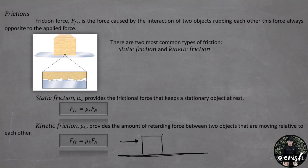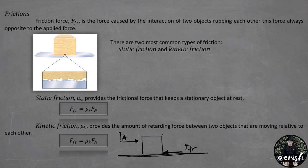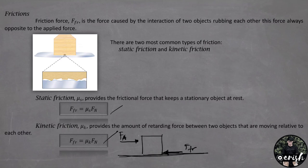For example, if we have an object on a surface and we apply a force F sub A, a retarding frictional force acts on it by Newton's third law of motion, opposing the applied force. The frictional force is found at the surface. There are three rules of thumb for kinetic friction: number one, it is proportional to the magnitude of the normal force; number two, it is independent of the relative speed of the surfaces; number three, it is independent of the area of contact between the surfaces.